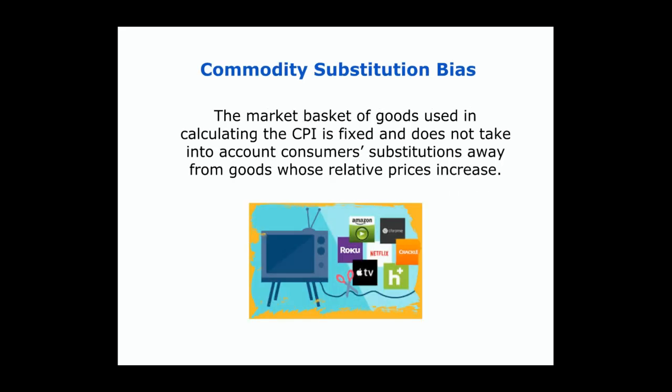This is also true with the commodity substitution bias. We may not be using the same products in the same quantities in the current year as we did in the base year. Many of us may have switched from cable to streaming, but because of the way the CPI is calculated, that switch — moving from goods where prices have gone up to substitutes where prices may have gone down — doesn't get accounted for when we calculate the CPI.